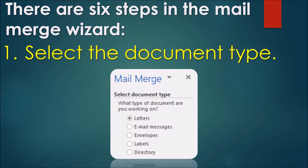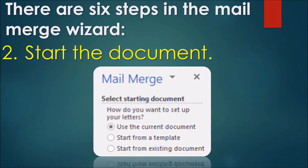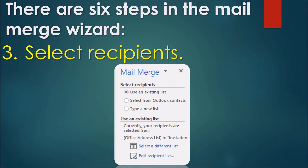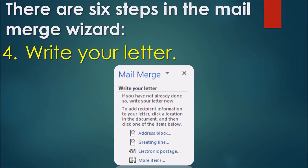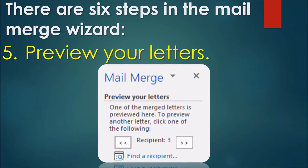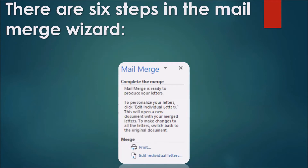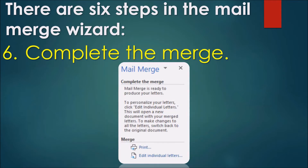The six steps are: Number 1, Select the Document Type. Number 2, Start the Document. Number 3, Select Recipient. Number 4, Write Your Letter. Number 5, Preview Your Letters. And last, Complete the Merge.